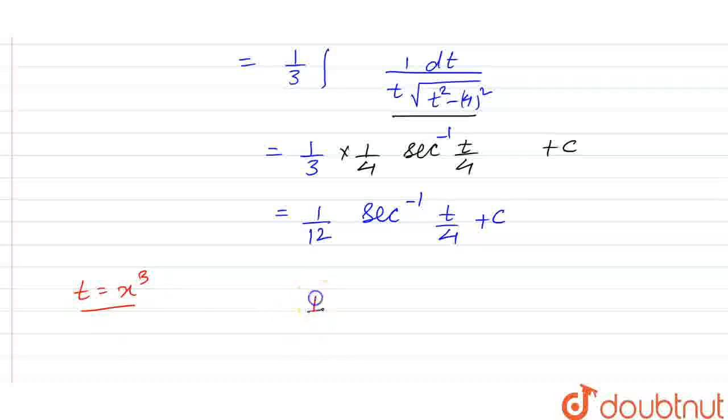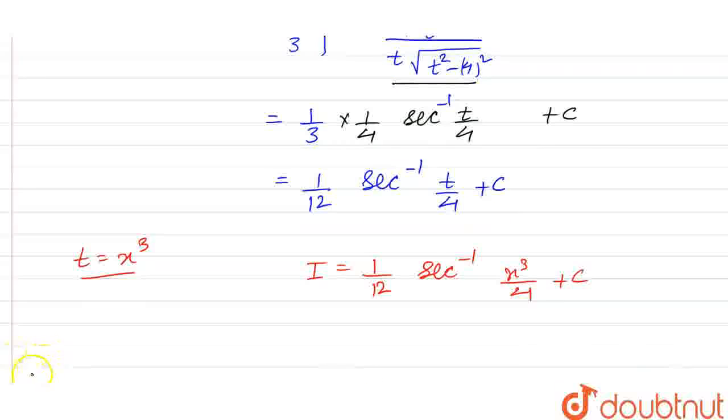Putting t as x cube we have i is equal to 1 by 12 and we have here will be sec inverse of x cube by 4 plus c. This will be the final answer. Thank you.